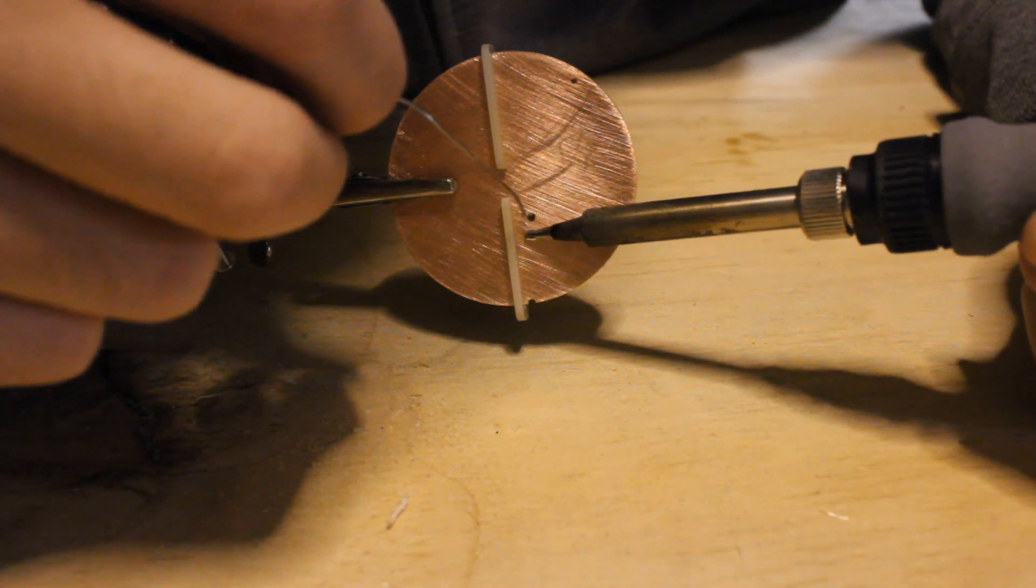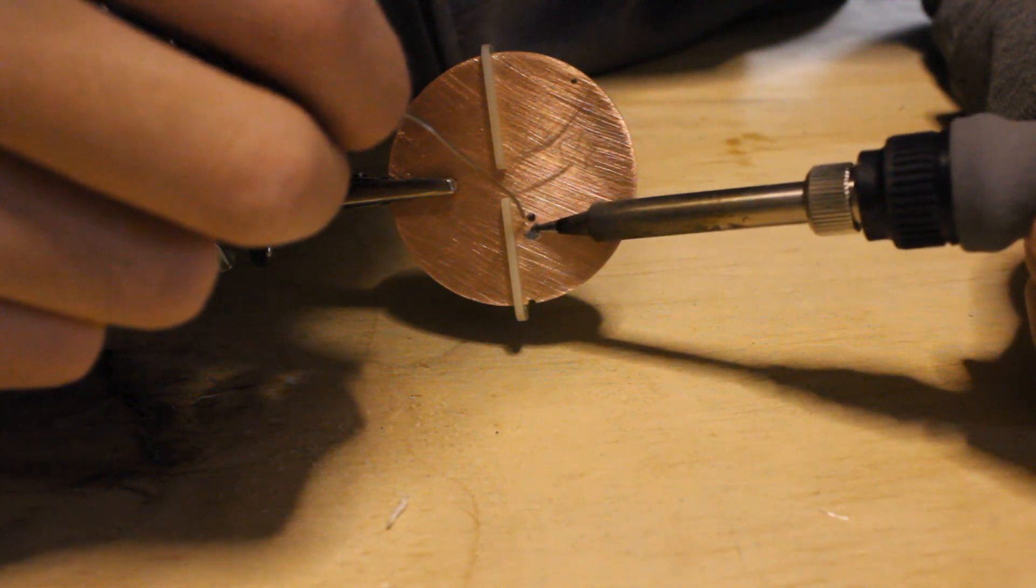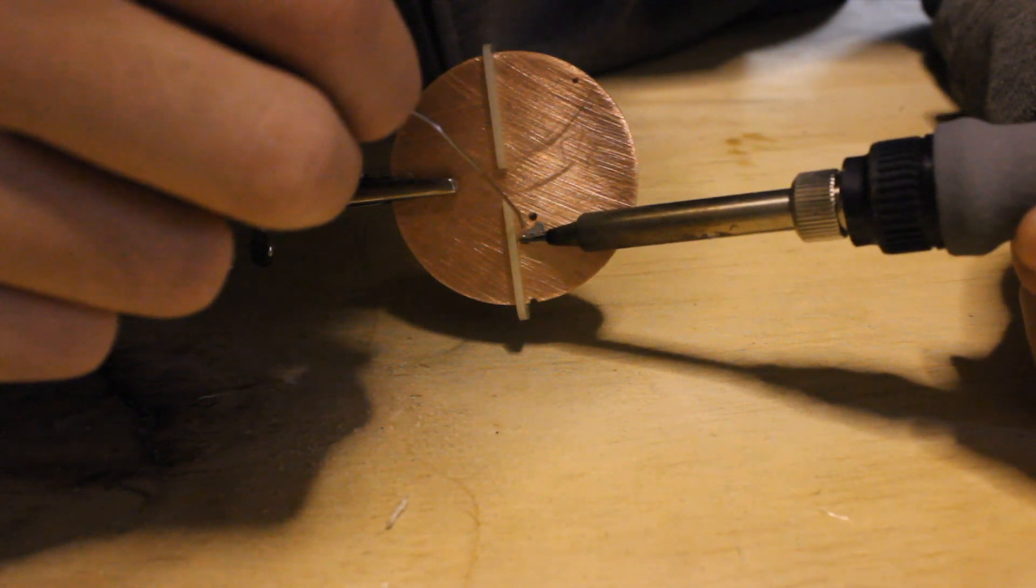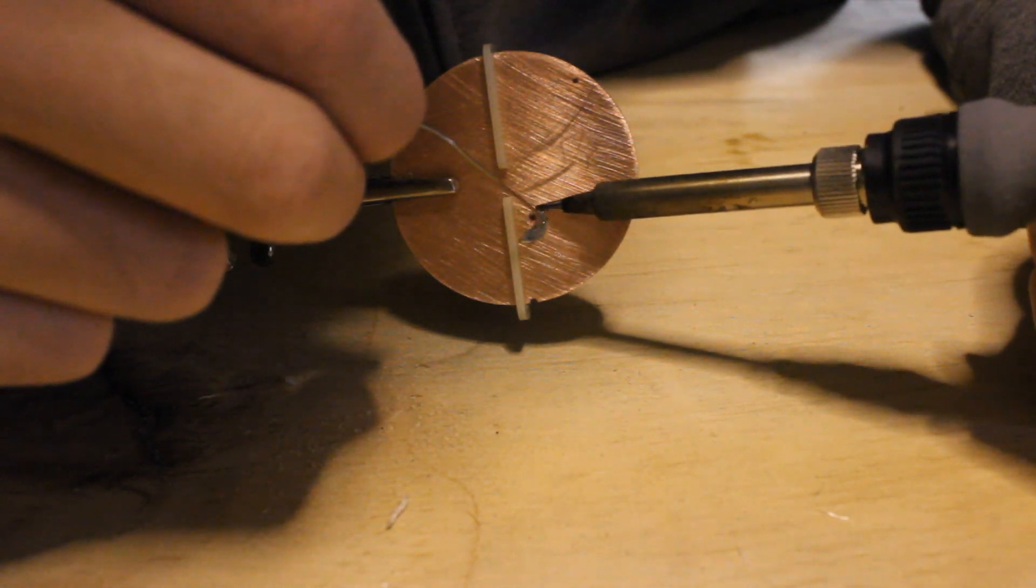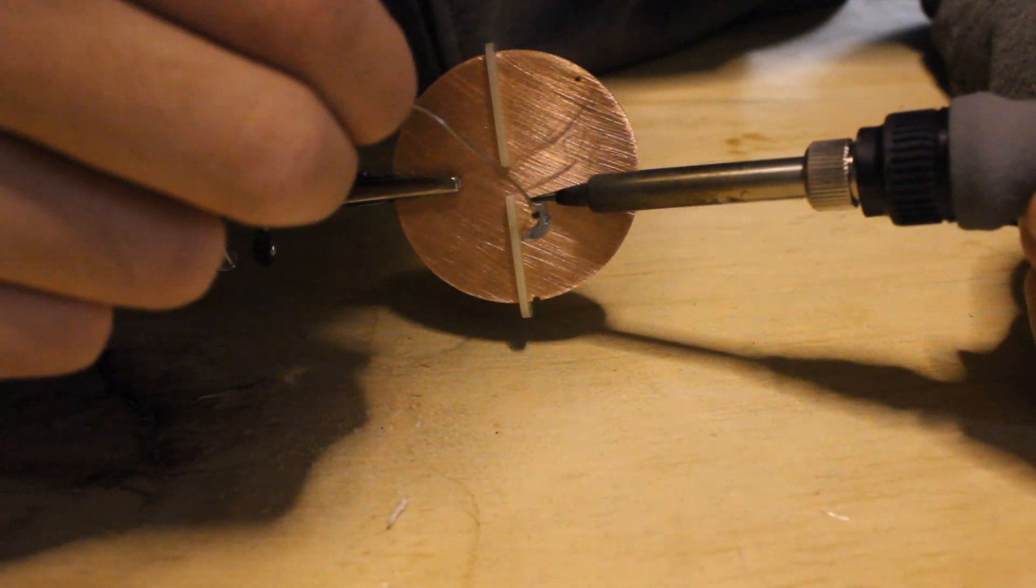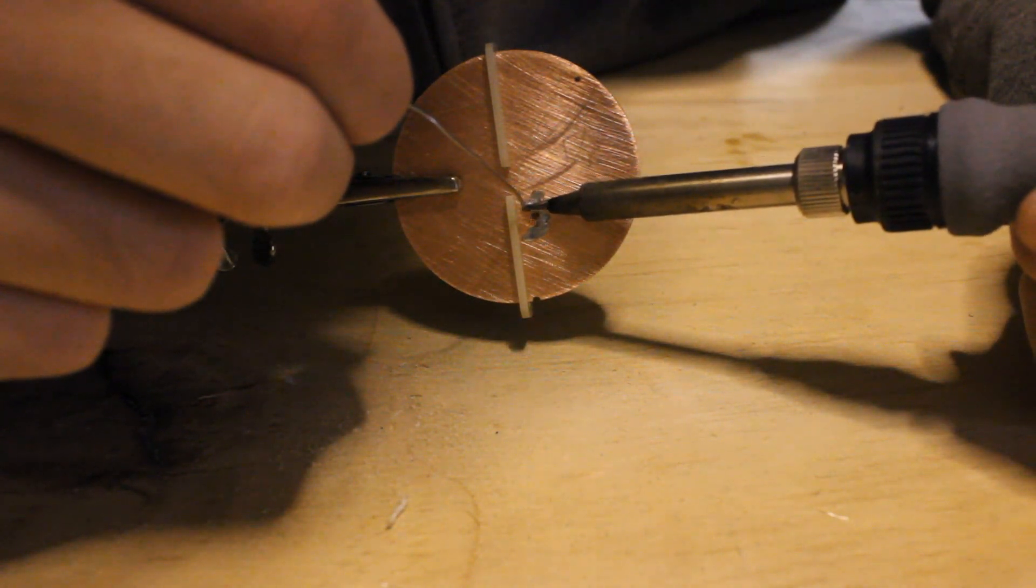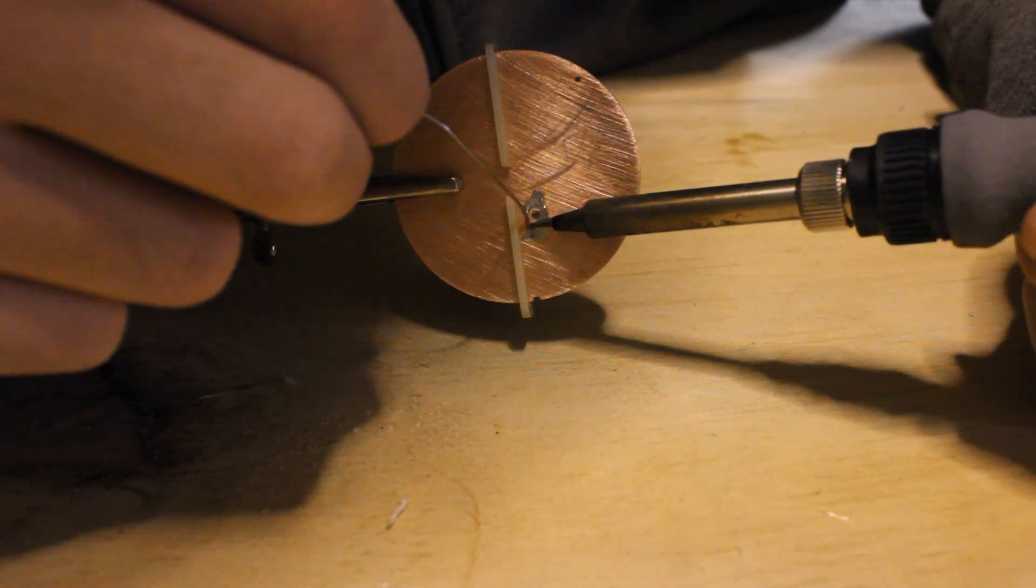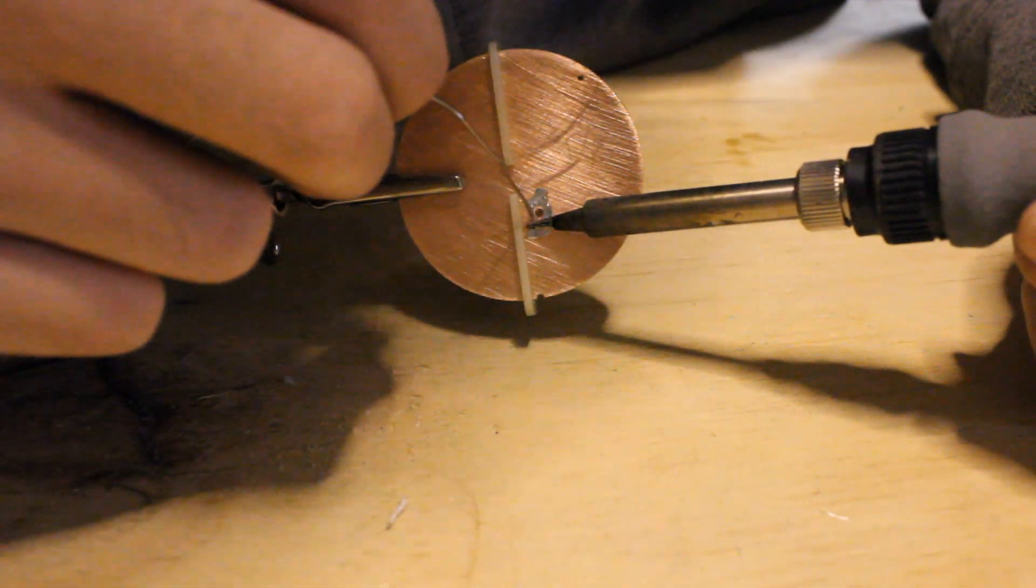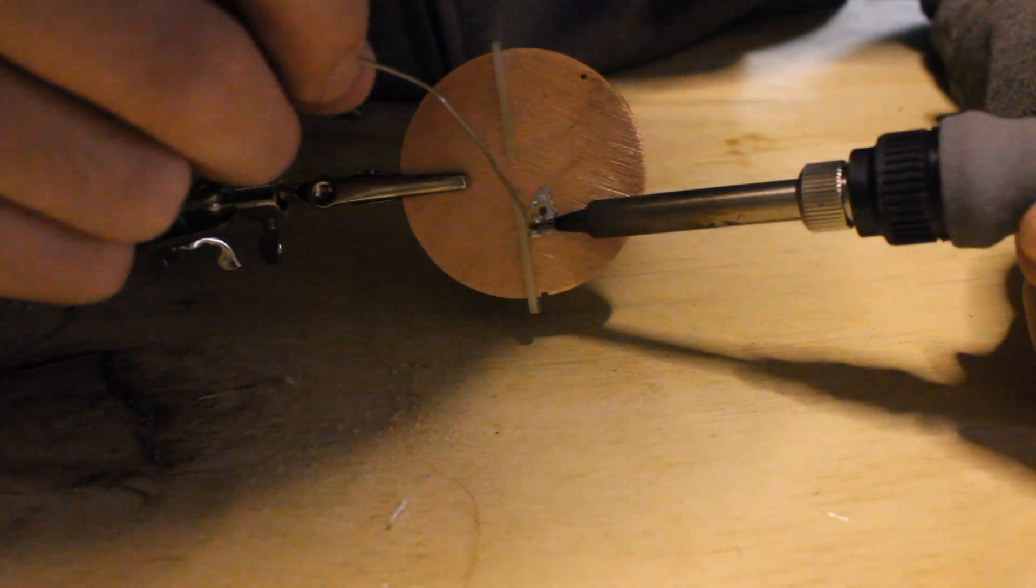So go ahead and just touch your iron to the copper plate and just melt solder around the area where you're going to have your coaxial shield, so you can pretty much just go back later and just touch your iron to the plate and it will just stick.